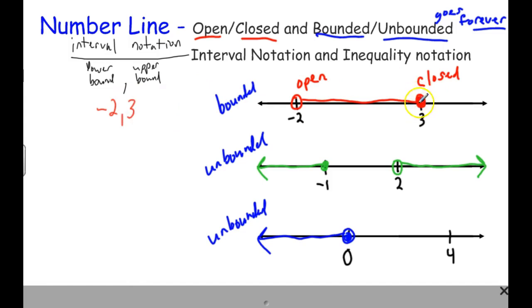And because this is a closed circle, I'm going to put a hard bracket here. Closed circle, hard bracket. Open circle, parentheses. And that is interval notation. Now you've also seen inequality notation. Inequality notation looks like this. It would be negative 2, and x is in between negative 2 and 3, less or equal to 3, less than negative 2. So that looks like inequality notation for that problem. You've probably seen that one before. This is probably new.